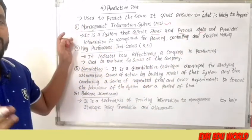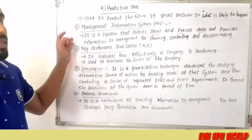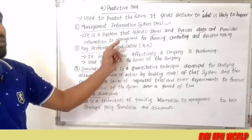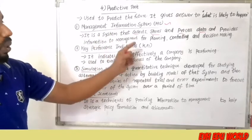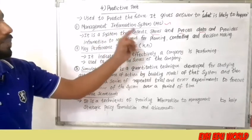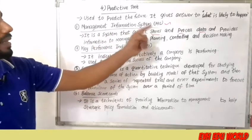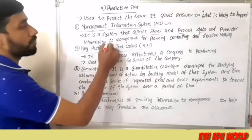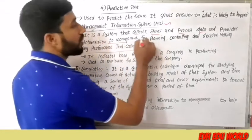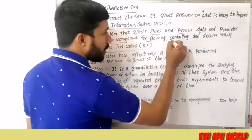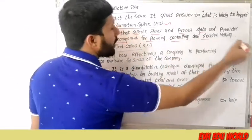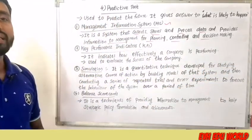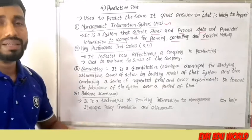Management information system (MIS) is a system that collects, stores, and processes data and provides information to the management for planning, controlling, and decision making.